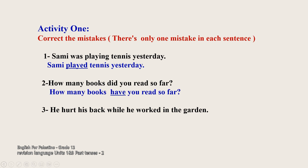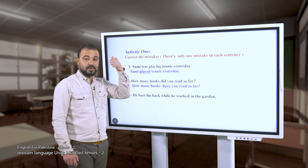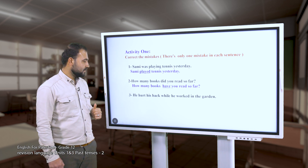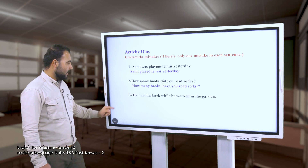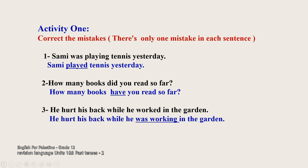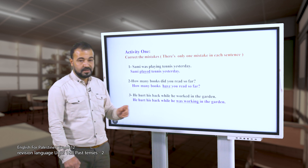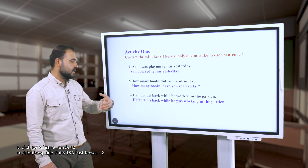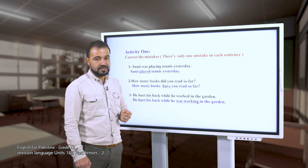Don't forget part one. Sentence three: 'He hurt his back while he worked in the garden.' The correct form is 'He hurt his back while he was working in the garden.' Remember, the keyword 'while' is followed with the long action in the past, which means the past continuous tense.